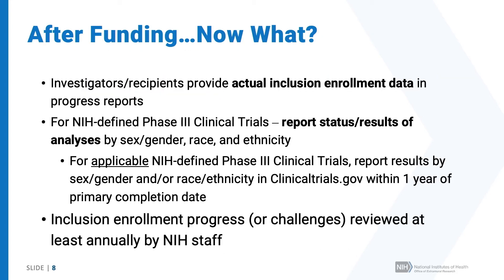After your study is funded, investigators still need to report actual enrollment data in their annual progress reports. You'll provide the table shown earlier and report the actual number of participants in your study since the beginning. If you're doing an NIH-defined Phase III clinical trial, there's an additional requirement to report the results of analyses by sex or gender, race, and ethnicity, or the status of those results. It's fine to say these analyses are still in progress, but you do need to address this in your progress report.